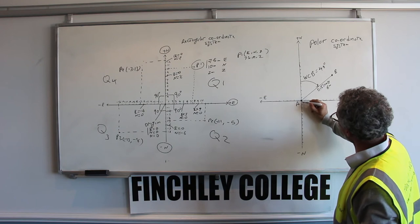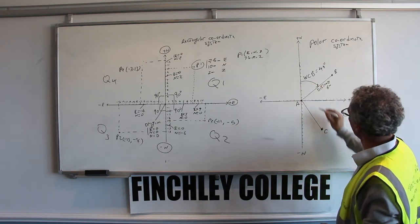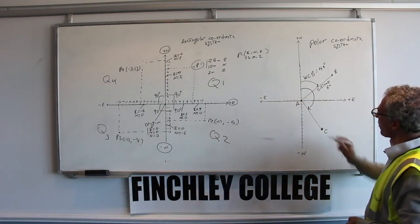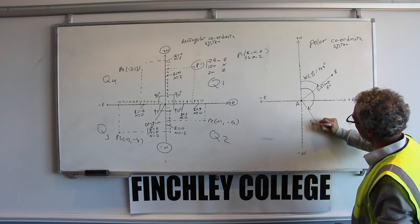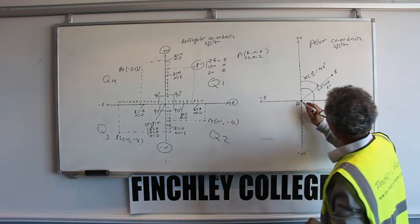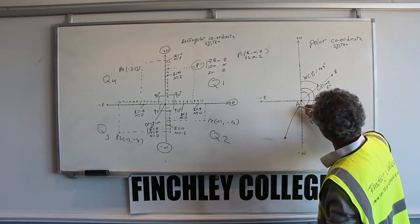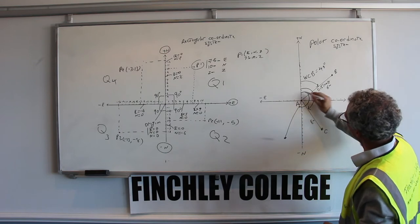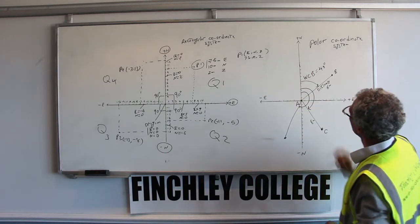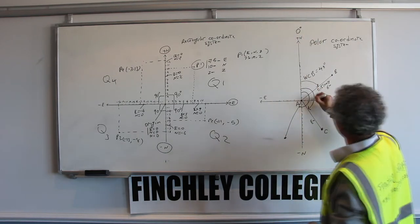The whole circle bearing is always measured from the north. So if your point happens to be at point C, the whole circle bearing is measured from north to the line, and if you know the distance, say 8 meters, we can mark C. If your point is in another quadrant, the whole circle bearing is again measured from north to the line.